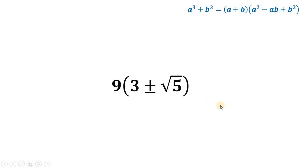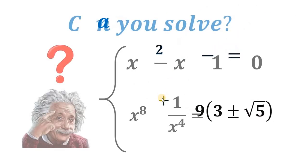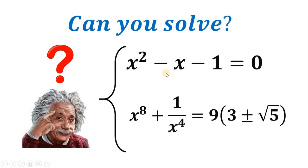Therefore, our answer to this question — given that x squared minus x minus 1 equals 0 — the value of x raised to 8 plus 1 over x raised to the fourth power is 9 times 3 plus or minus square root of 5. And as always, we are done.